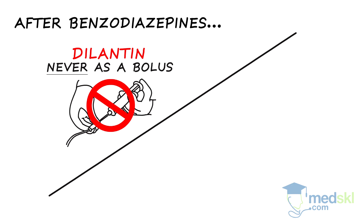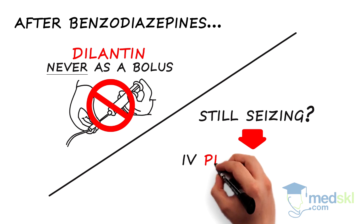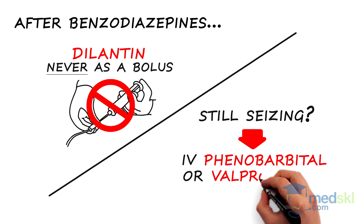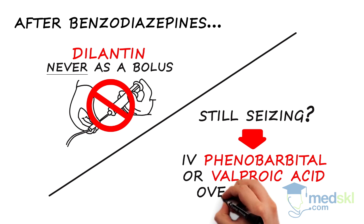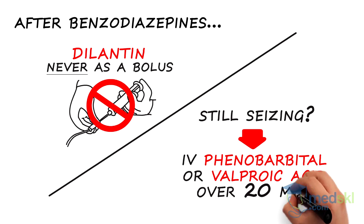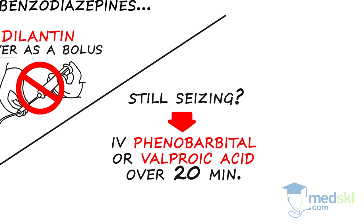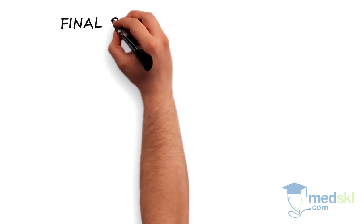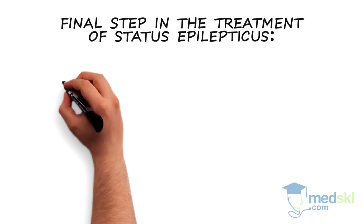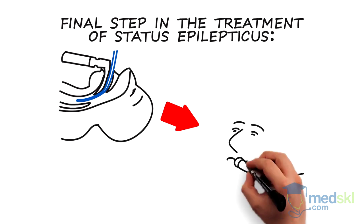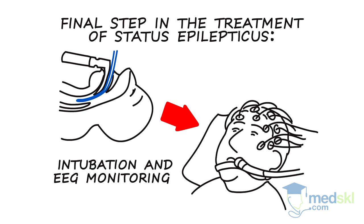If the patient is still seizing, intravenous phenobarbital or valproic acid can be given over 20 minutes as a second-line agent. The final step in the treatment of status epilepticus is general anesthesia with intubation and EEG monitoring.